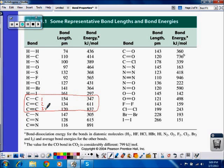And then the other thing you'll notice is that bond energy increases with increasing bond order. So single bonds require the least amount of energy. Triple bonds require the most amount of energy to break.